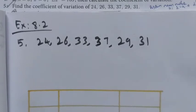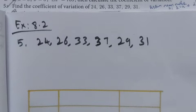Hi students, Class 10, Exercise 8.2, Question 5: find the coefficient of variation. The data are given as 24, 26, 33, 37, 29, and 31. First, we need to find the mean and the standard deviation. The coefficient of variation formula is sigma divided by x-bar, into 100 percentage.